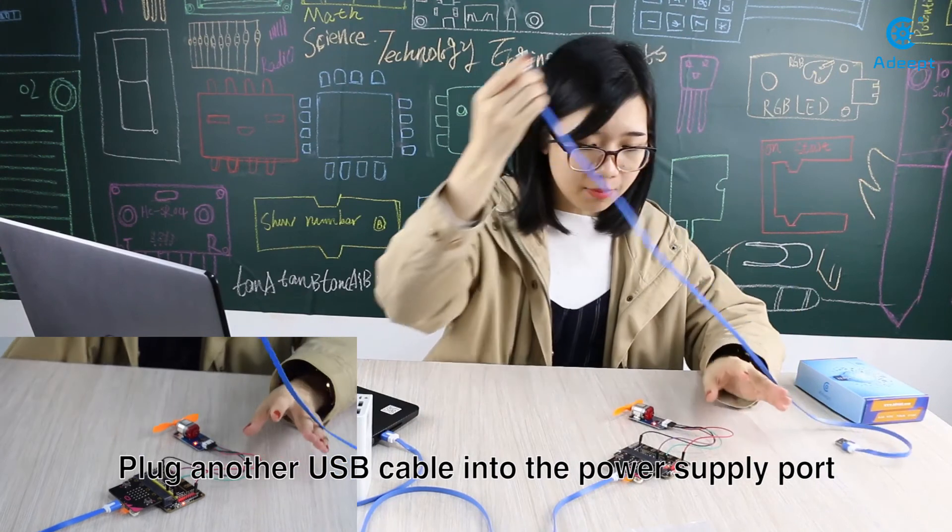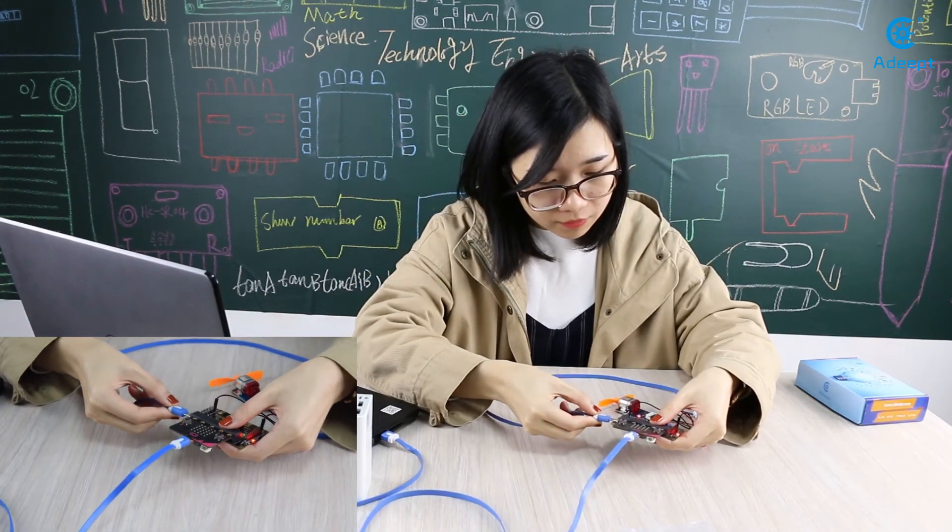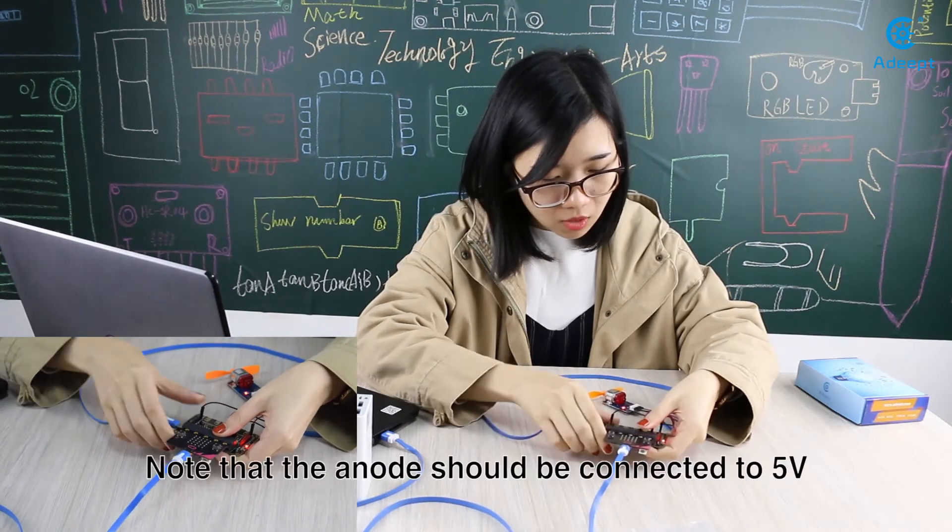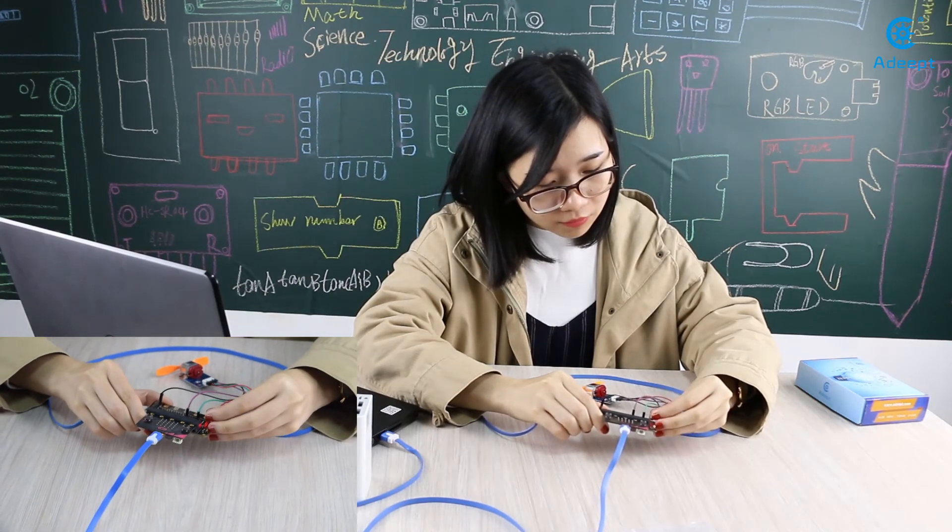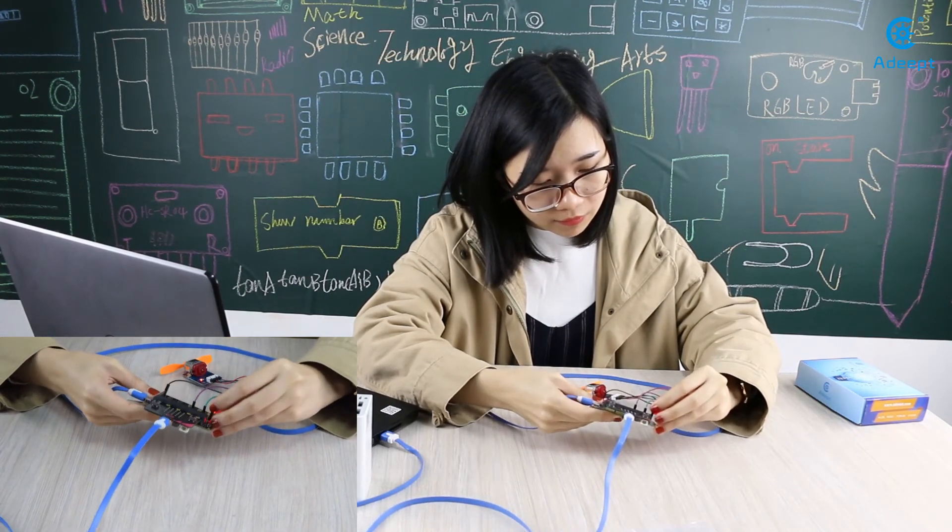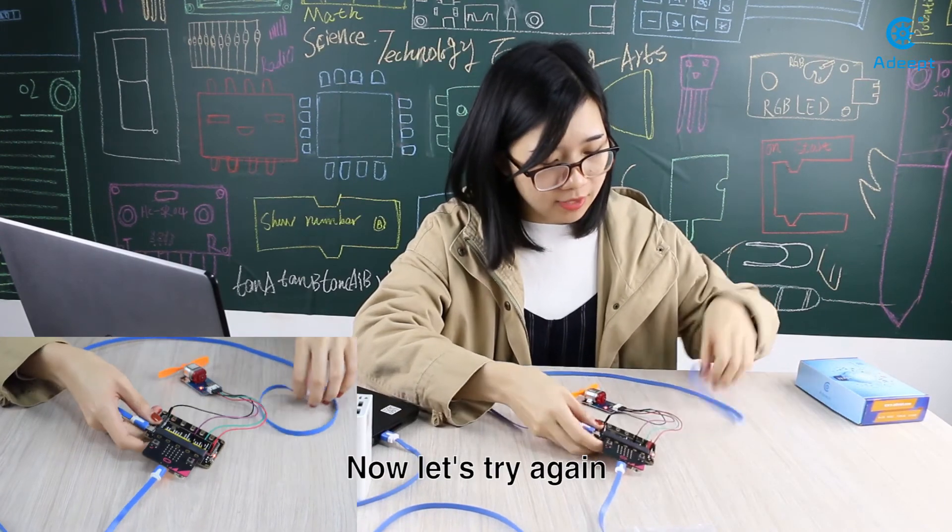Plug another USB cable into this power supply port. Note that the anode should be connected to 5V. And remember to switch on. Now let's try again.